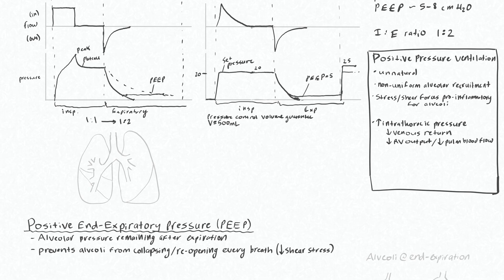What Pressure Control Volume Guarantee does is deliver a couple of breaths and determine the compliance of the patient's lungs — how much volume you can get for any set pressure. After it figures out what pressure will give you a tidal volume of 500 mils, it starts delivering that pressure. This is nice because it allows you to use a pressure control mode while also ensuring you're getting reasonable tidal volumes. But you still have to make sure your pressure doesn't get out of control in a low compliance situation.